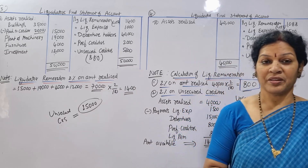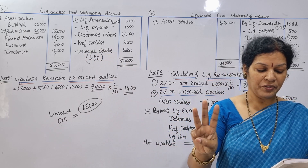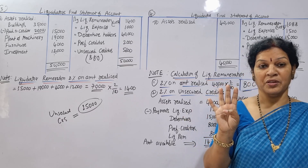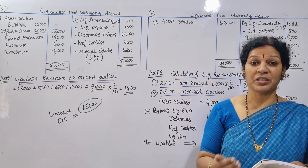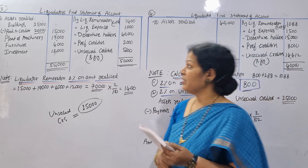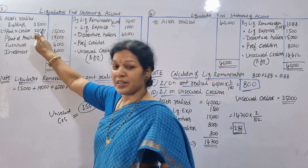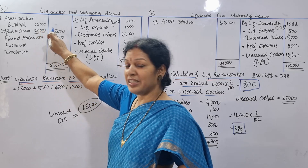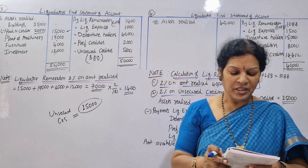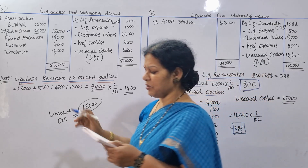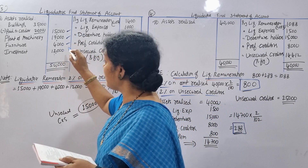Assets realized: we have four assets — building, plant and machinery, furniture, investments. Building: $35,000 minus $20,000 paid to secured creditors equals $15,000. Plant and machinery: $19,000. Furniture: $4,000. Investments: $12,000.